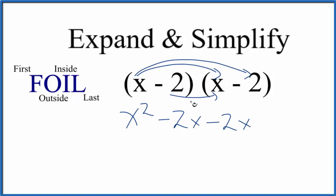And then the last terms, so we have negative 2 times negative 2. Negative times a negative, that'll give us a positive, so we have positive 4 here.